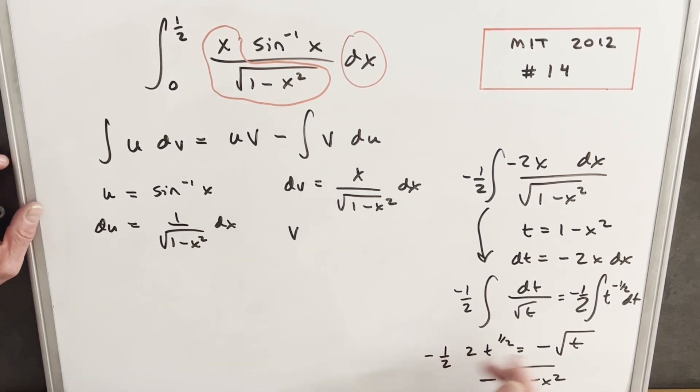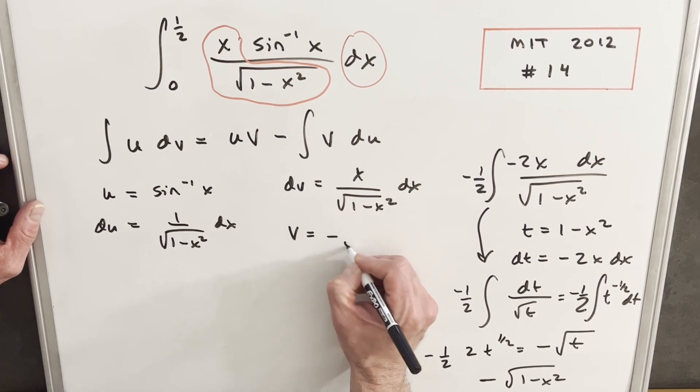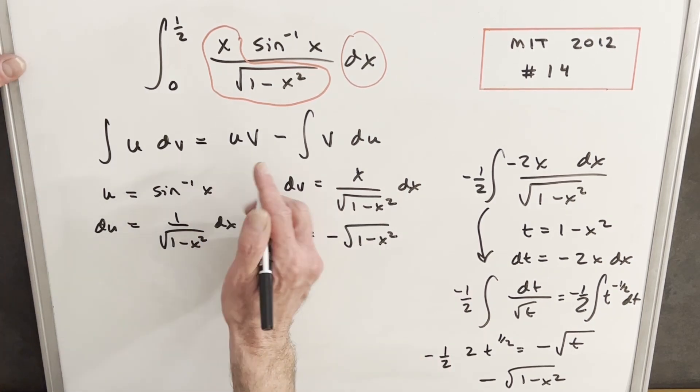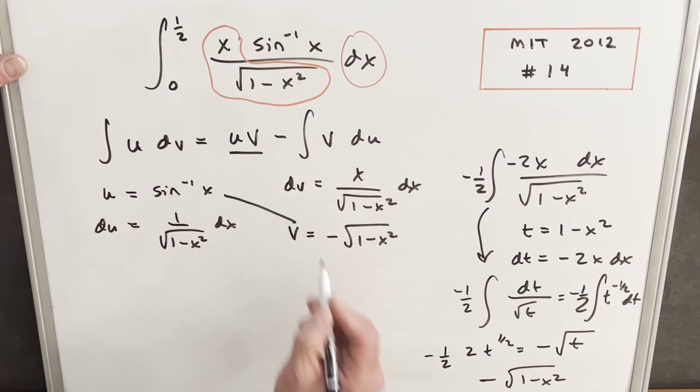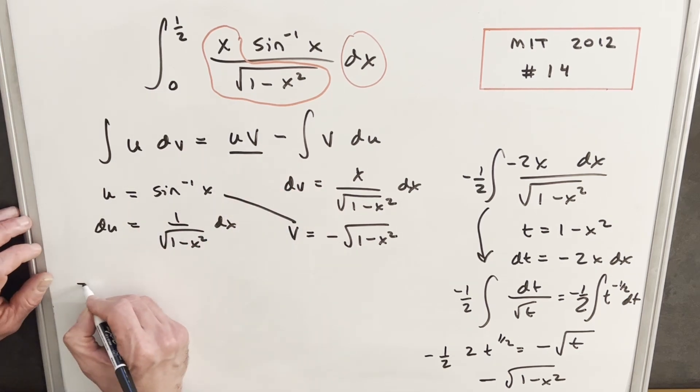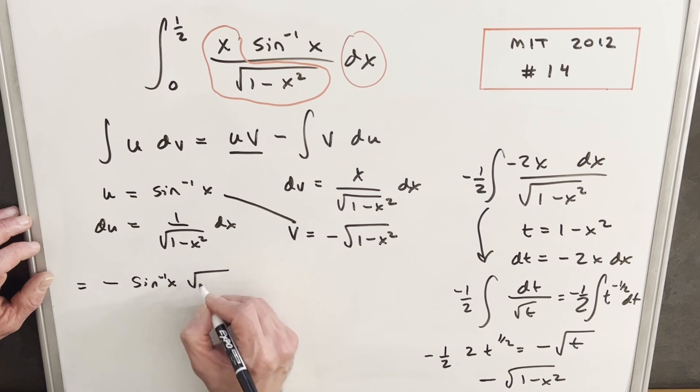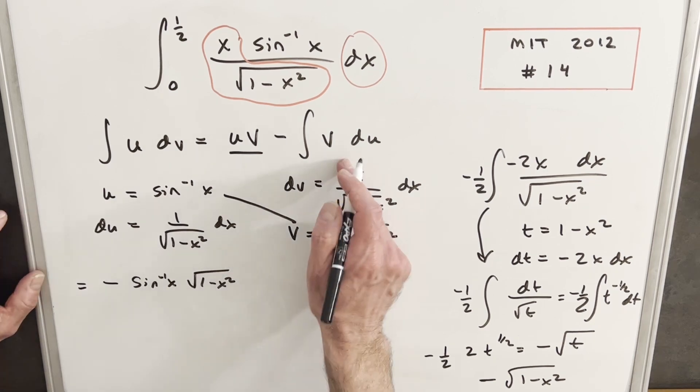And so this is going to be our v value, minus square root of 1 minus x squared. Then for the next step, our uv value is just this diagonal right here, u times v. We'll write that out as, bring the minus sign in front, and we're going to have arcsin x times the square root of 1 minus x squared.